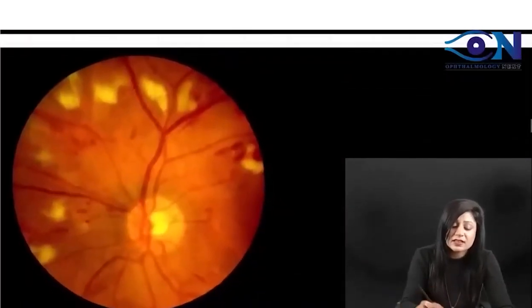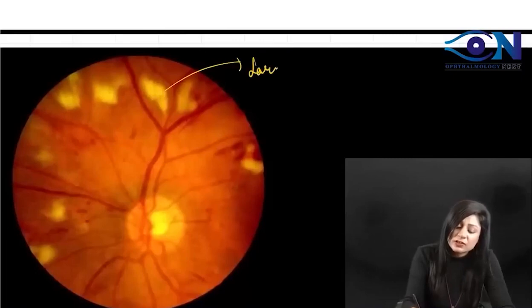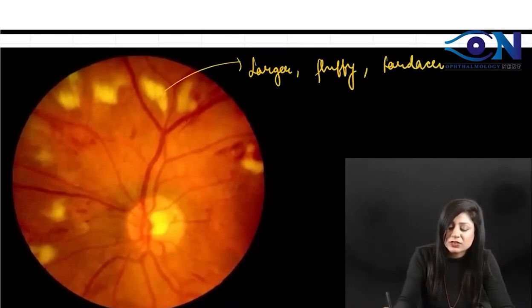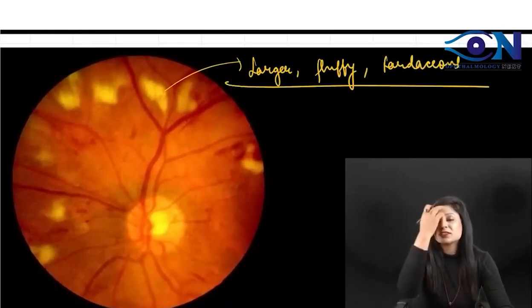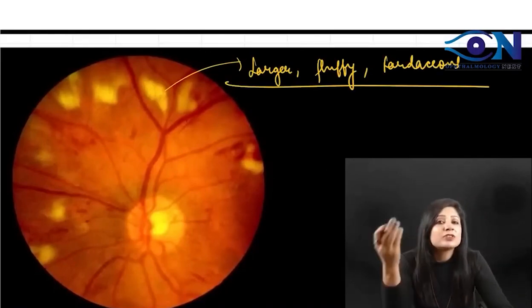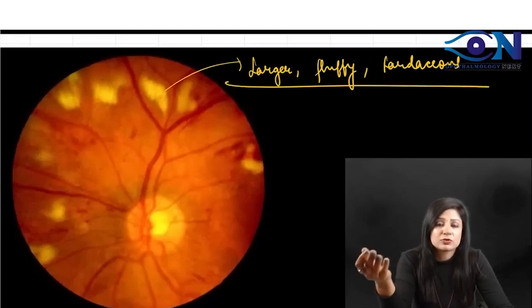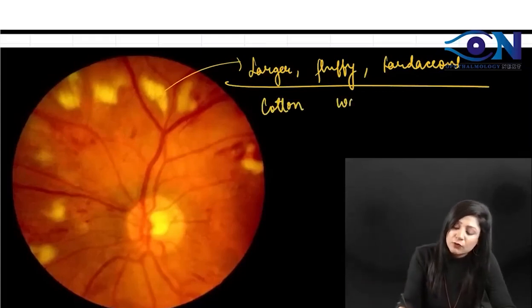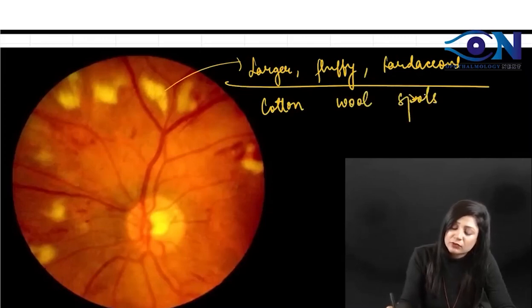On the other hand, if you look at the soft exudates, you can see they are much larger and fluffy — they are flocculent. When you see them, you can see how different they are. They resemble cotton balls, which is why they are called cotton wool spots.